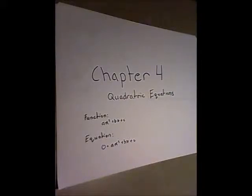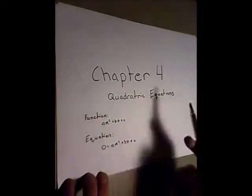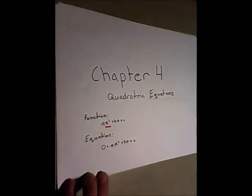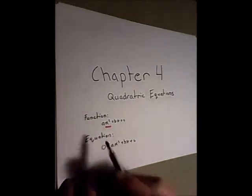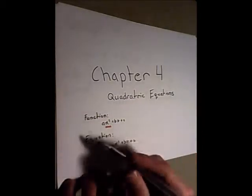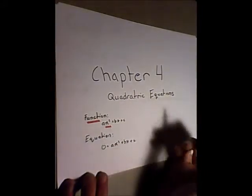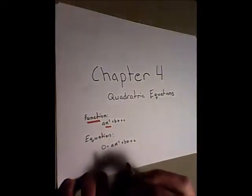Okay, in Chapter 4 we're going to be looking at quadratic equations. A quadratic equation is anything with a squared variable like this x right here. And in Chapter 4 we look at two different types of relationships. One of them is a function where you just are given a formula and it's not equal to anything in specific.